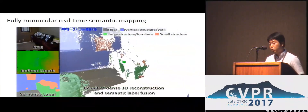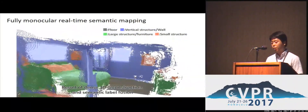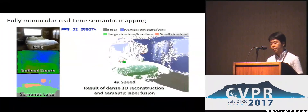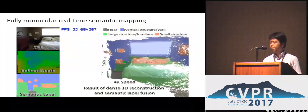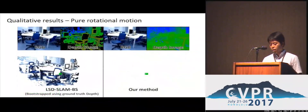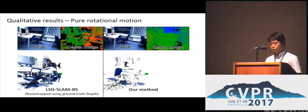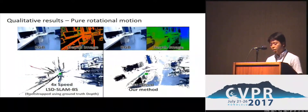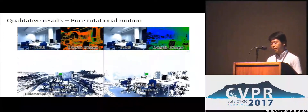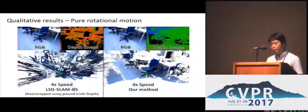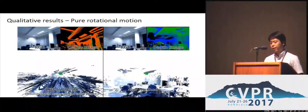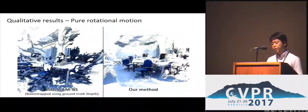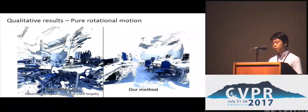In addition to depth estimation, we also estimate the semantic label in each key frame, and the depth and semantic label are fused together into the global model. We show a comparison with LSD SLAM in pure rotational camera motion. Our method can reconstruct the scene densely even when the camera is moving purely rotationally, whereas the result of LSD SLAM is very imprecise due to the missing stereo baseline.